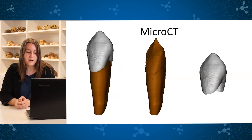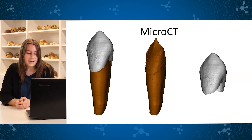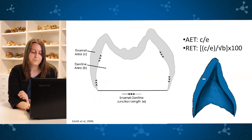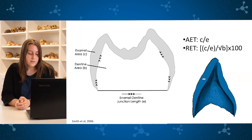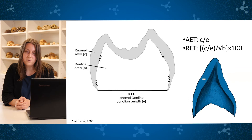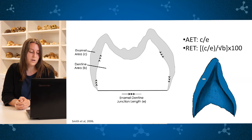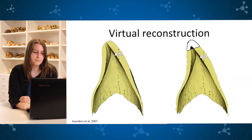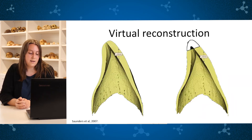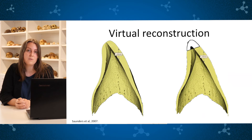Virtual reconstructions of the canine crown were performed through MicroCT with the Mimics Materialise program. In this reconstruction, enamel and dentine can be separated. We followed the protocol proposed by Smith and Collette in 2006: the tooth crown is cut virtually in a buccolingual plane, then we measure the area of the enamel and dentine as well as the length of the enamel-dentine junction. From these values, we calculated the average enamel thickness and the relative enamel thickness. For teeth with occlusal wear, the height of the crown was calculated following the methodology proposed by Sandor and Collette in 2007.